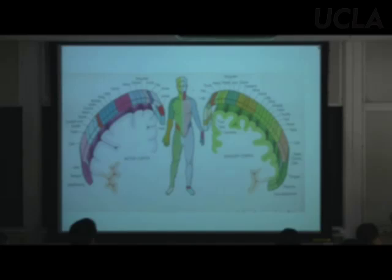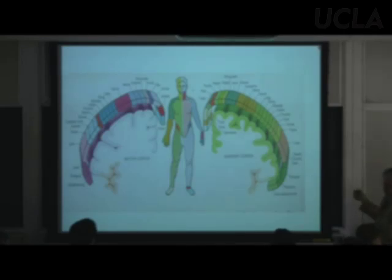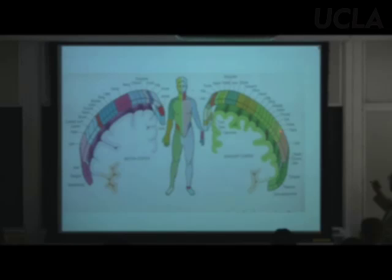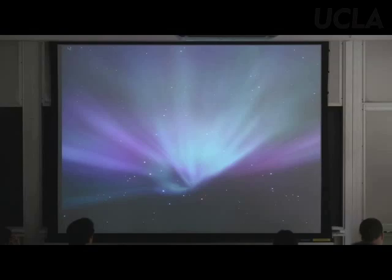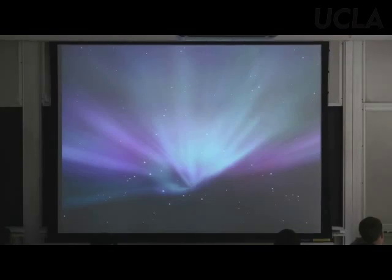The postcentral gyrus in the parietal lobe has a map of the body — a somatosensory homunculus. It's disarticulated: abdominal, pharynx, tongue, lips, face, hand, wrist, trunk, leg. The artist shows the postcentral gyrus on one side corresponding to sensation on the opposite side of the body because the pathways are crossed.